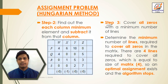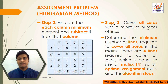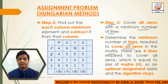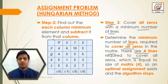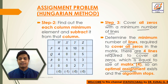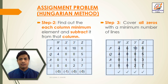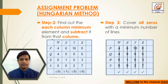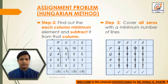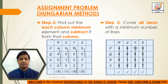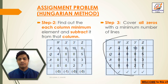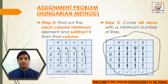Step 3: Cover all zeros with a minimum number of lines. Determine the minimum number of lines required to cover all zeros in the matrix. There are 4 lines required to cover all zeros, which equals the size of the matrix (4). So an optimal assignment exists and the algorithm stops. Here we draw lines 1, 2, 3, and 4 to cover all zeros.